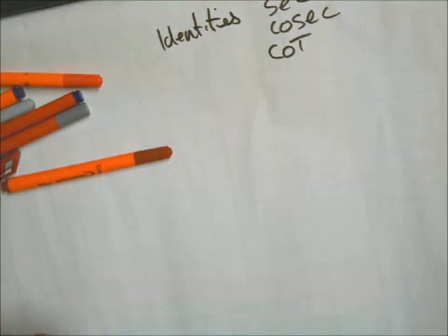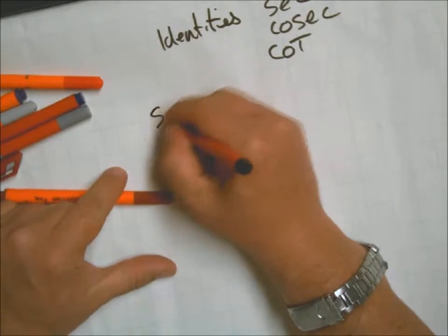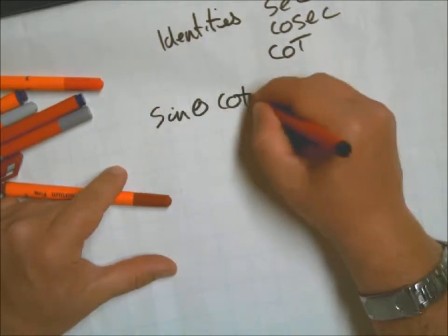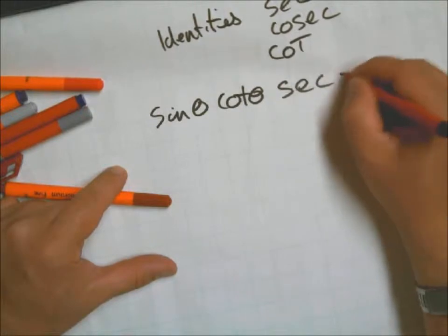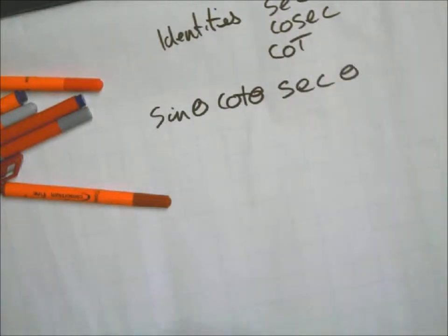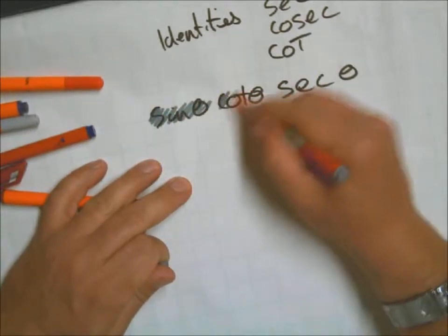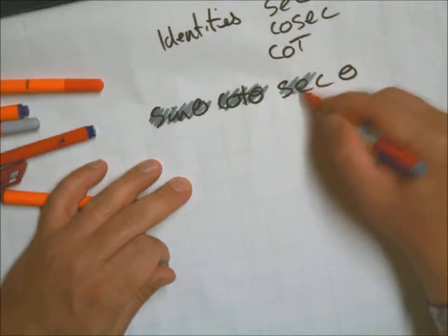I want to give you an example of one here, so we'll start off with sine theta cot theta sec theta. We look at that and go, oh no, what are we going to be able to do?